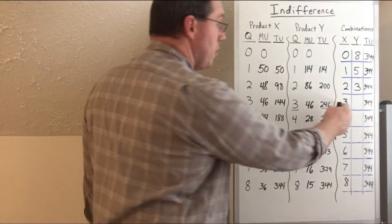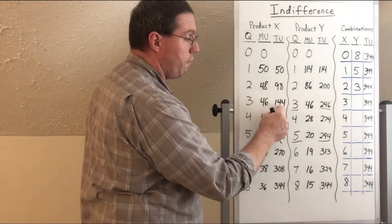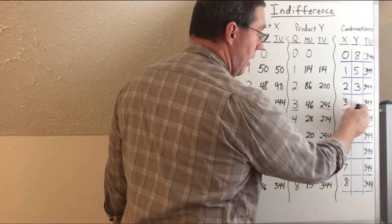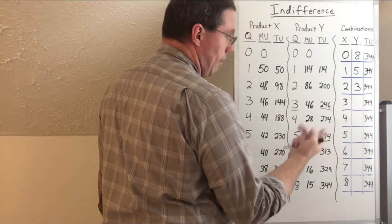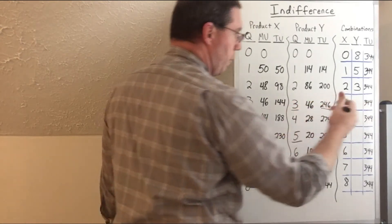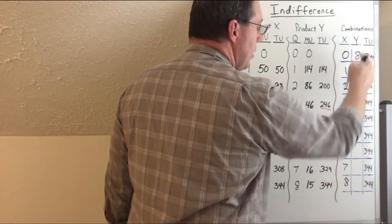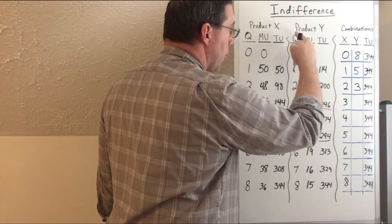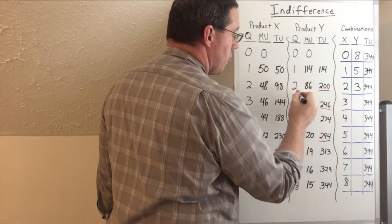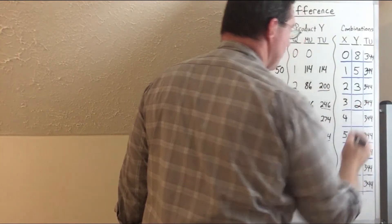Now let's do the same for three units of X. Three units of X gives 144. So 344 minus 144 is 200. We need to know how many units of product Y give us 200 — and that's two units. Therefore we put a two right here.